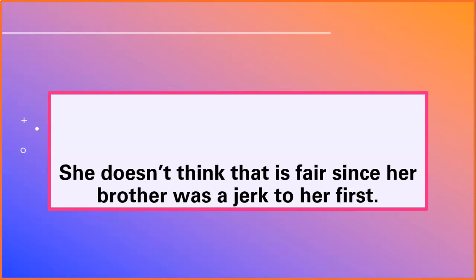She didn't think that is fair since her brother was a jerk to her first. Which part of my sentence is dependent? 'Since her brother was a jerk to her first' is my dependent clause. If I walk up to you and say, 'Since her brother was a jerk to her first,' that's not gonna make sense by itself — it can't stand alone, so it's dependent. The independent thought is 'she doesn't think that is fair.' She doesn't think that is fair is independent; since her brother was a jerk to her first is dependent — which makes this a complex sentence. The independent clause is at the beginning, so I don't need a comma.